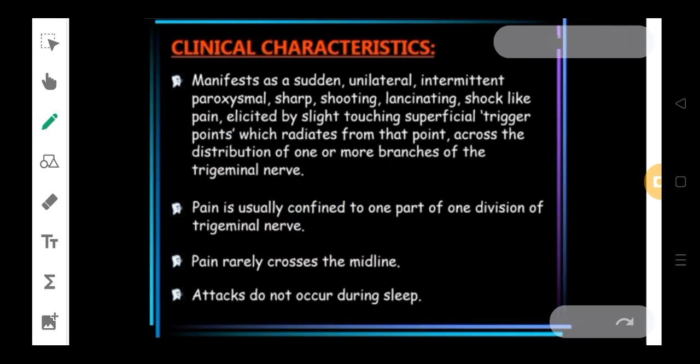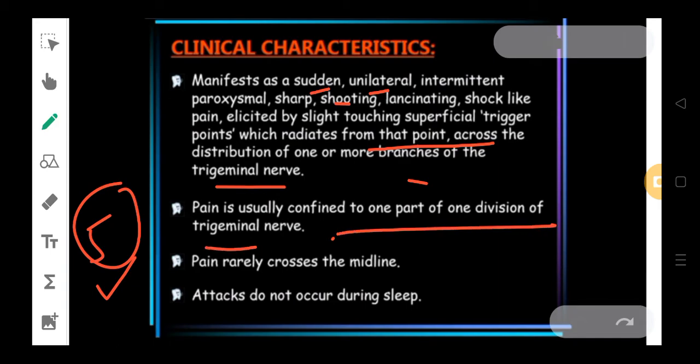Moving ahead to some clinical characteristics. You have to keep this on your tips that it is a very sudden, unilateral, intermittent, paroxysmal, sharp and shooting pain. It is a very shocking and shooting pain. The patient becomes very disturbed with even some seconds. It is going to last for 5 seconds and that 5 seconds would be the most difficult seconds. Shock-like pain elicited by slight touching of superficial trigger points which radiates from that point across the distribution of all the 3 branches. Even if you slightly touch that particular branch area, the pain will start triggering. Pain is usually confined to one part of the division of the trigeminal nerve, so whichever branch is being affected, the pain will be confined to that particular area only.